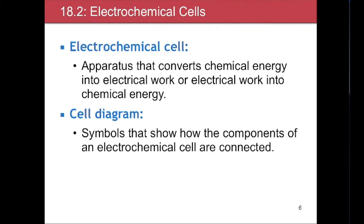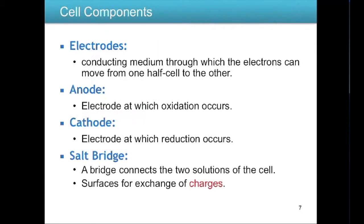We'll look at these in more detail and also discuss the cell diagram, a shorthand notation that shows how the components of the electrochemical cell are connected. There are electrodes — conducting media through which electrons move from one half cell to the other. There's an anode, where oxidation occurs, and a cathode, where reduction occurs. A salt bridge connects the two solutions and exchanges charges to keep both halves electrically balanced, preventing charge buildup that would inhibit electron movement.